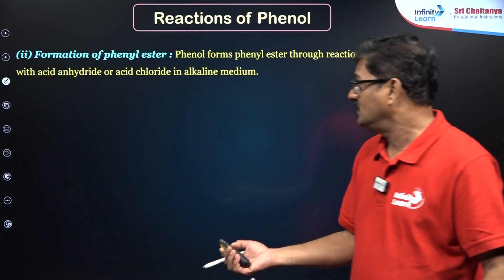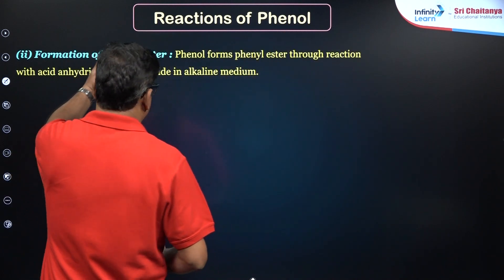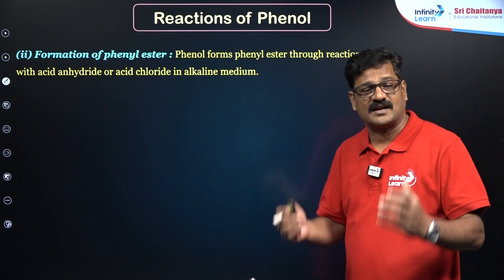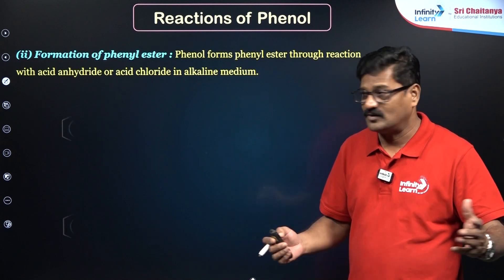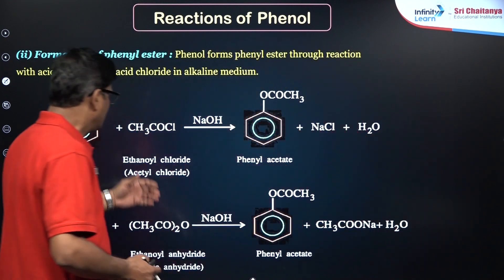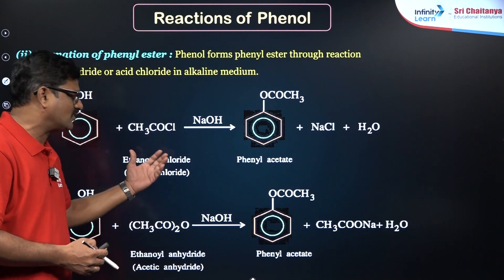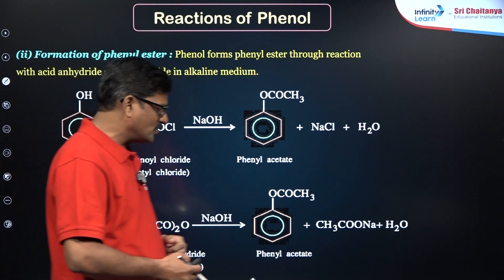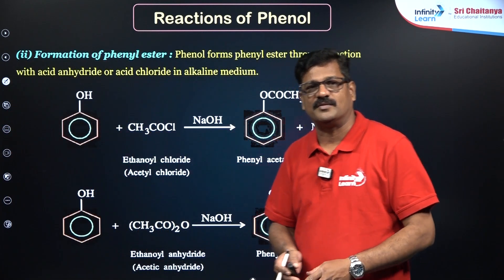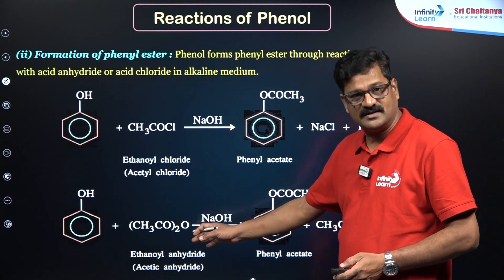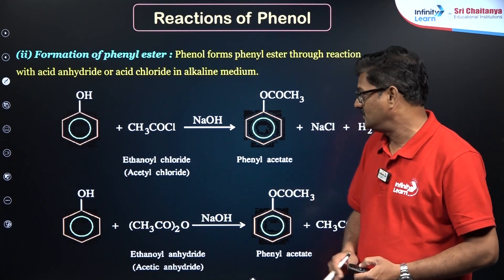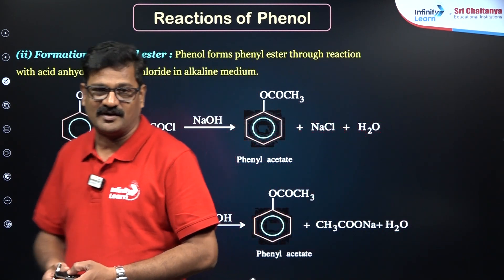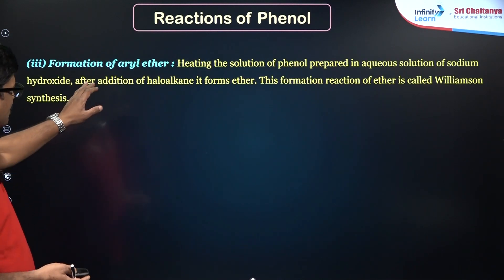Formation of phenyl esters: phenol forms phenyl ester through reaction with an acid anhydride or acid chloride. Phenol reacts with acetyl chloride (ethanoyl chloride) to give phenyl acetate, an ester. The same product is formed if phenol reacts with acetic anhydride in the presence of sodium hydroxide. Phenyl acetate is a very important ingredient in the pharma industry.